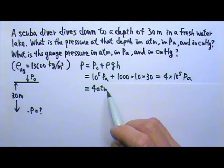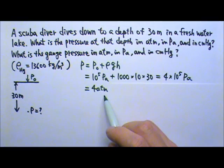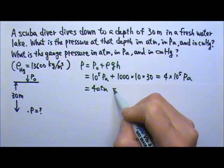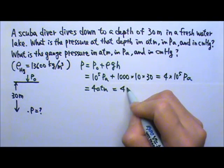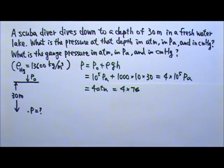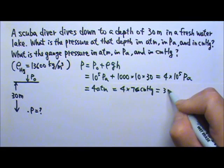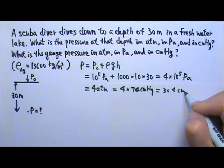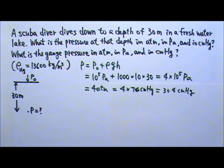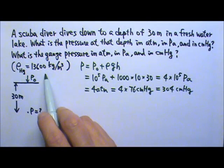Now we have to find how many centimeters of mercury this is. If you happen to remember that 1 atmosphere is 76 centimeters of mercury, then all you have to do is multiply 4 by 76 centimeters of mercury, and you will get 304 centimeters of mercury. Or we can use the density of mercury to find this.